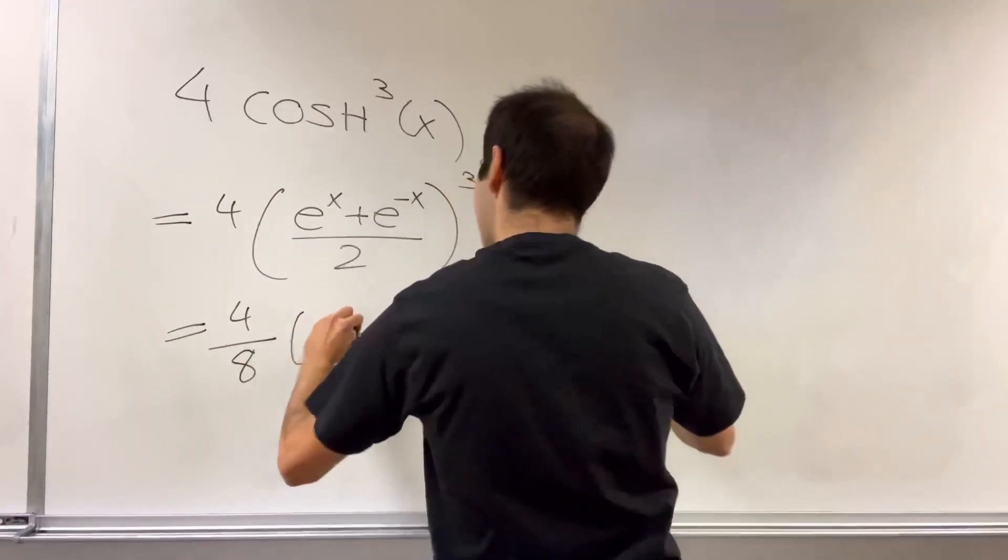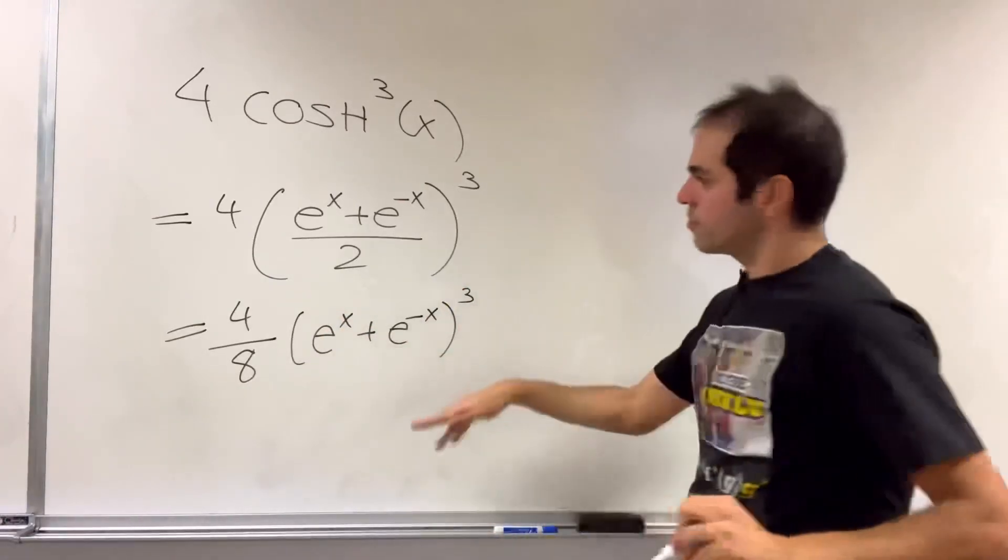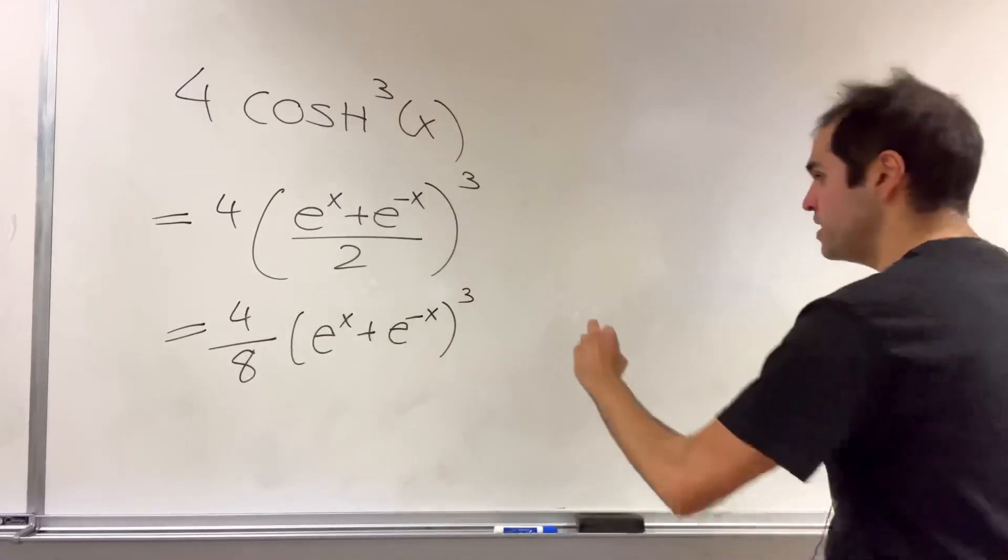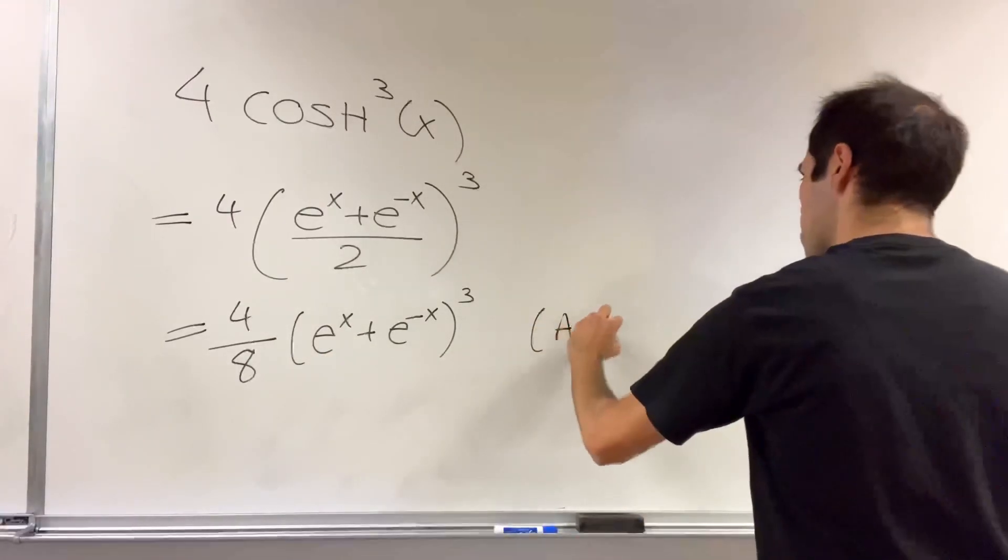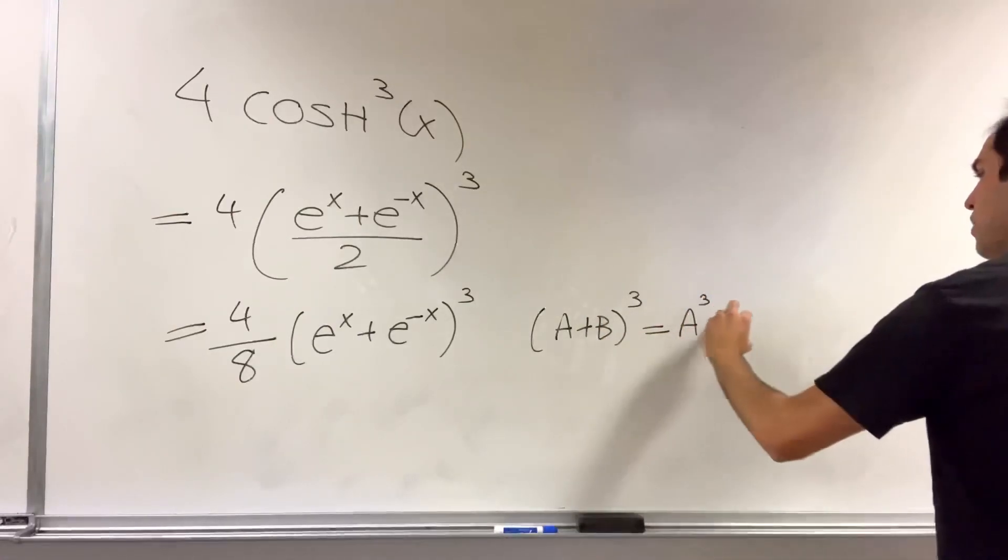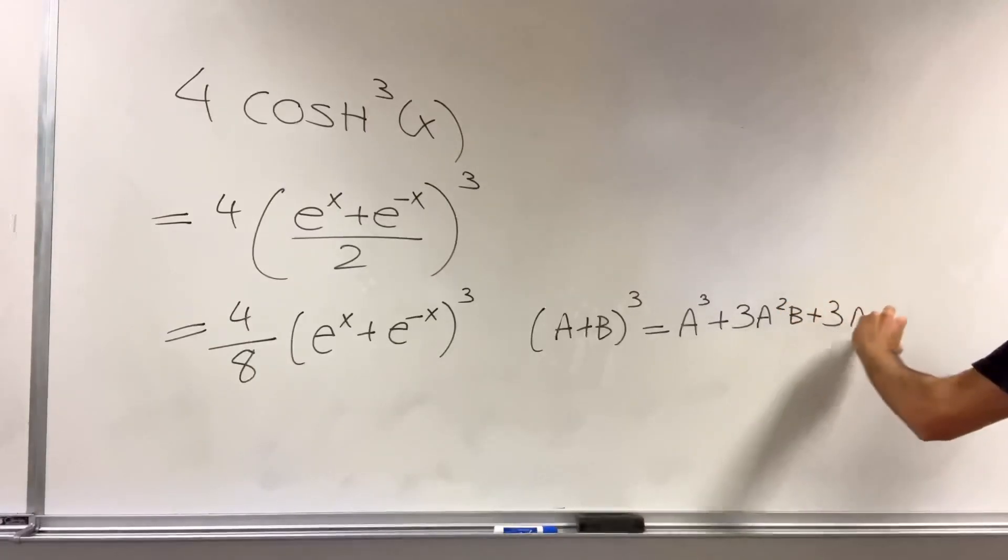e to the x plus e to the minus x cubed. And now notice this is of the form a plus b cubed, which is the same thing as a cubed plus 3 a squared b plus 3 a b squared plus b cubed.